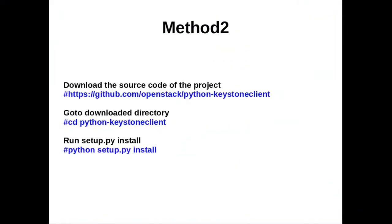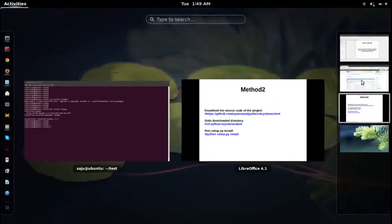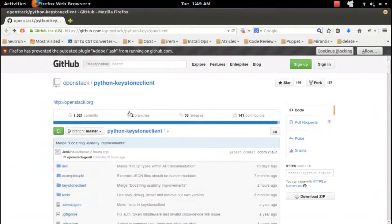Method 2: first download the source code of the package, then go to the download folder, then run python setup.py install. I will show you — I'm going to download the source code of the python-keystoneclient package.